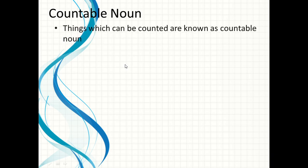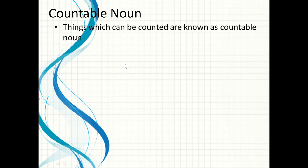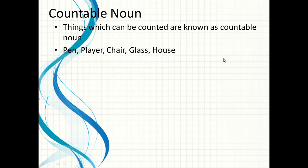Now, countable and uncountable nouns. Countable noun: things which can be counted are known as countable nouns. Whether it is a proper, common, or material noun — agar hum us ko numbers mein count kar sakte hain, gin sakte hain, then these nouns are known as countable nouns. For example: pen, player, chair, glass, house. These all things can be counted, that is why these are countable nouns.